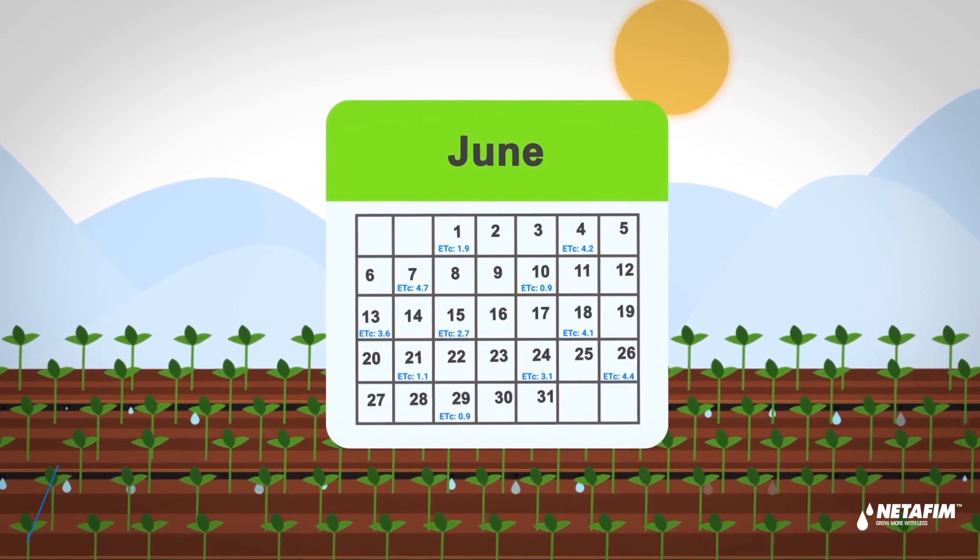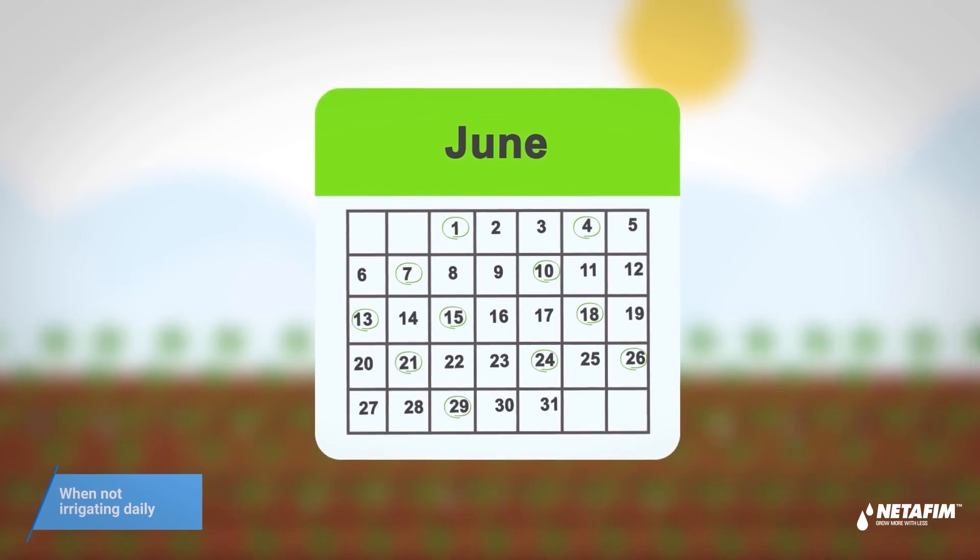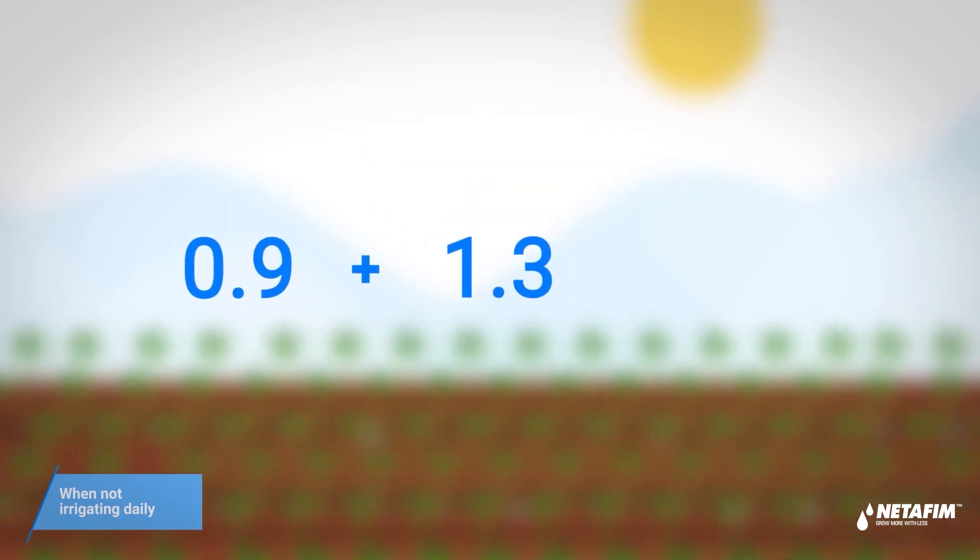Now what happens if you're not irrigating daily? In this case, you need to sum the ETC of the days since your last irrigation event. The sum is the amount you'll need to irrigate.